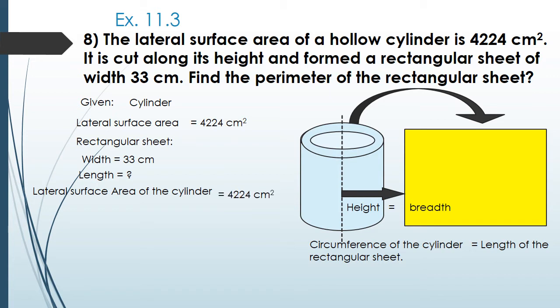The lateral surface area of the cylinder equals 4224 centimeters square. We know the formula: lateral surface area = 2πrh. Here, 2πr is the circumference of the cylinder, which equals the length L of the rectangular sheet, and h equals the breadth B of the rectangular sheet.